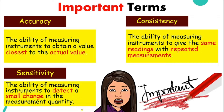How about sensitivity? If one instrument can detect a very small change in the measurement quantity, that means the instrument is very sensitive. The more sensitive the instrument, the more accurate it is. For example, instrument A can detect a change of 0.1 cm, whereas instrument B can measure up to 0.001 cm. So instrument B is more sensitive and more accurate because it can detect the smaller change.